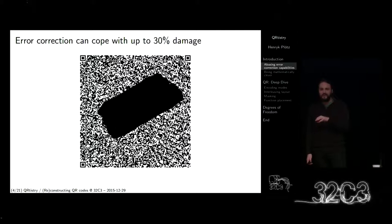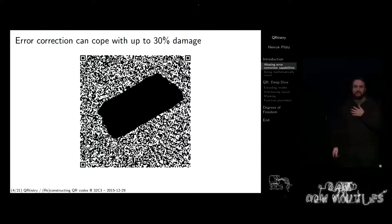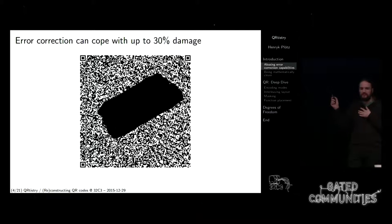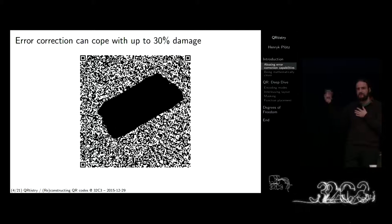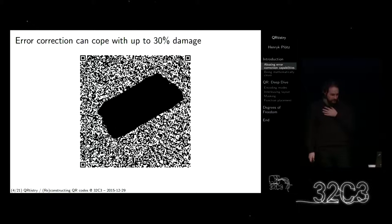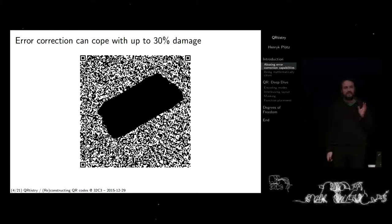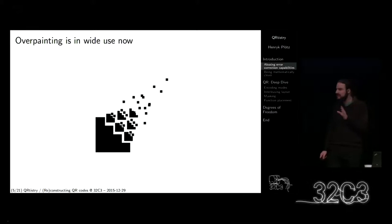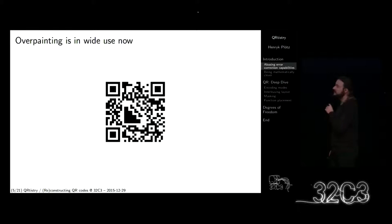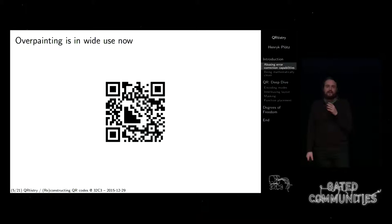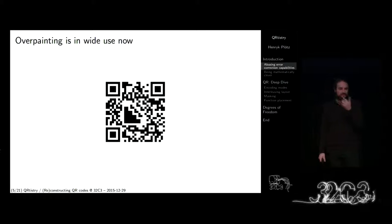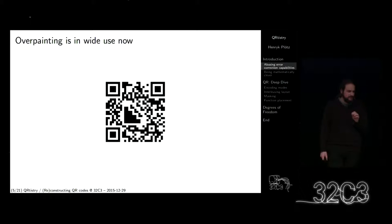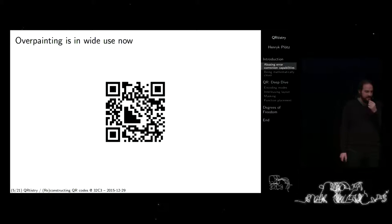Das hier ist etwas leichter — da habe ich nur über die Pixel drüber gemalt, ich habe es einfach schwarz gemacht. Jetzt sind es nicht 30% Damage, sondern nur 15% kaputt, weil die Hälfte der Pixel eh schon schwarz war. Ein Overpainting wird sehr häufig gemacht. Ein neuliches Beispiel, was mir gut gefallen hat, war ZenStorm — das ist ihr Logo, das ist der QR-Code dazu. Es schaut so aus, als ob der Code embedded ist, aber in Wirklichkeit ist er wieder nur drüber gemalt.